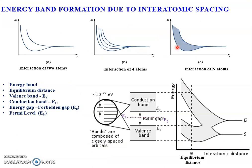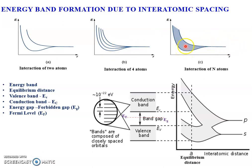As the interatomic distance decreases, we can observe the splitting of the outermost energy level of an electron into two energy levels in the case of two atoms. For four atoms, one energy level splits into four energy levels. For n atoms, it splits into n energy levels, but the spacing between the energy levels is very, very small — on the order of 10⁻²² electron volts — making it very difficult to discriminate between two energies, so it looks like a band of energy levels.